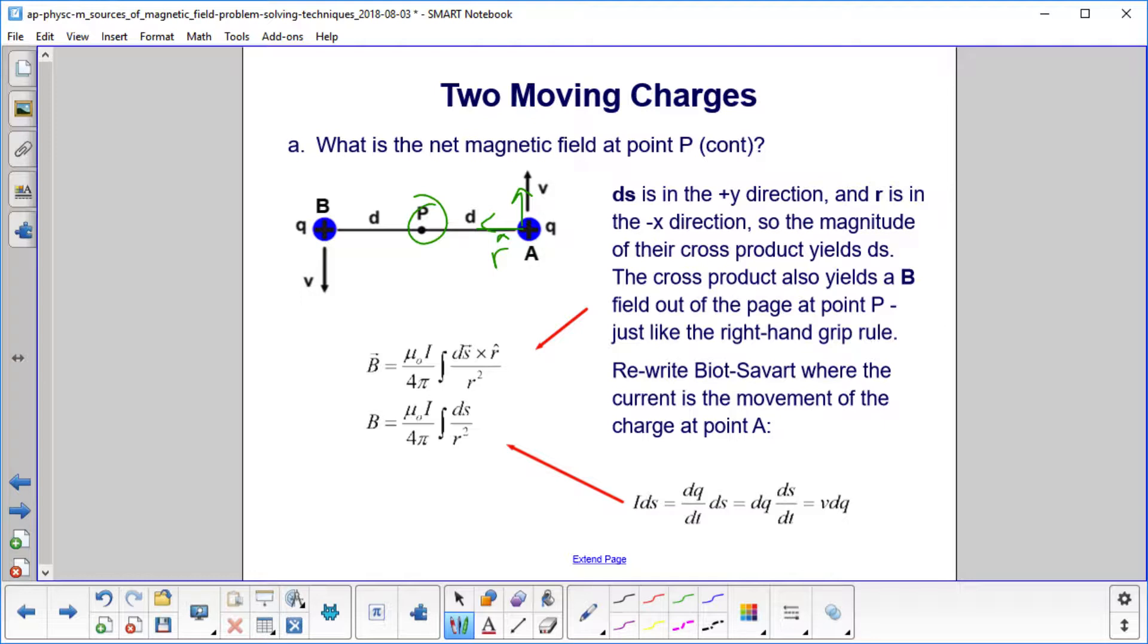The magnitude of their cross product will just be dS, right? They're perpendicular, and the magnitude of R hat is 1, so we're just left with dS over here. Also, when you do the cross product, you find that the magnetic field is coming out of the page at point P, just like we did with the right-hand grip rule.